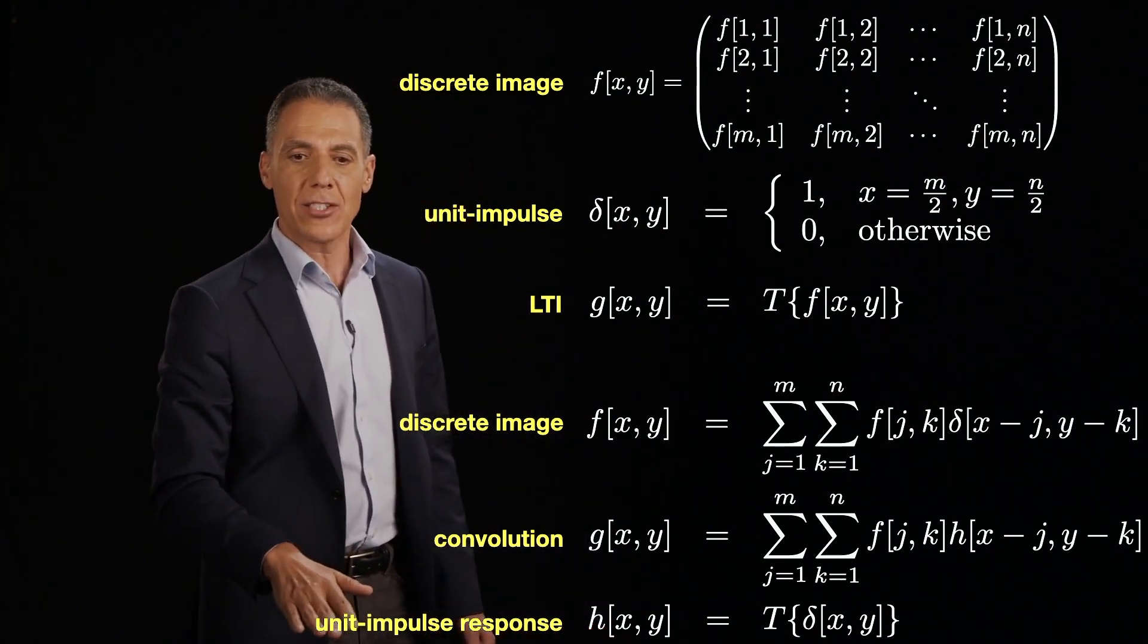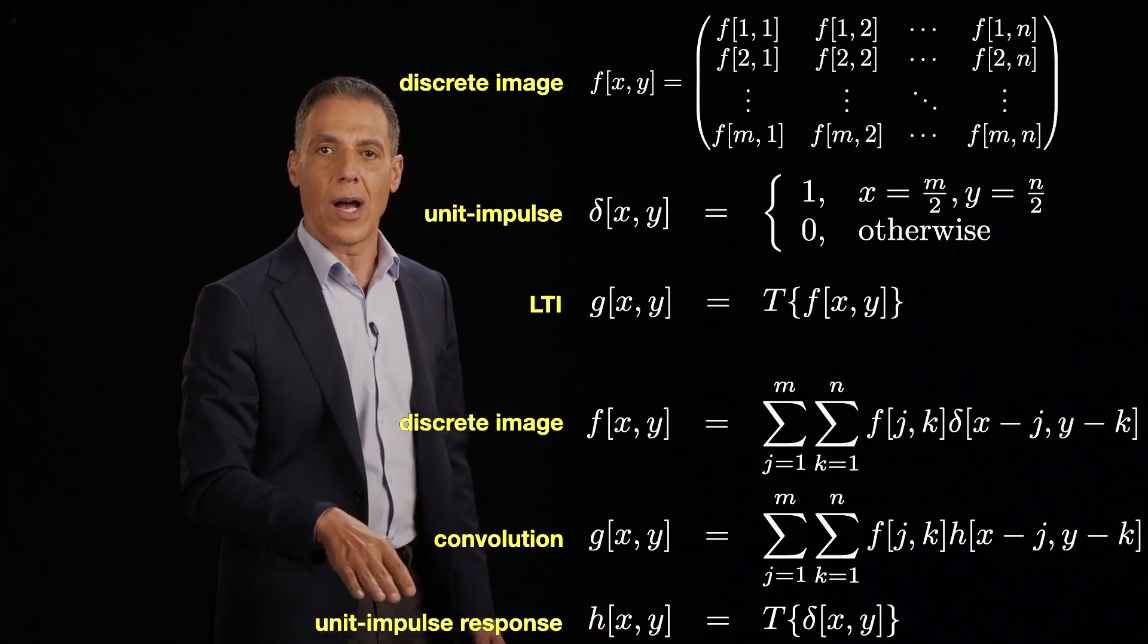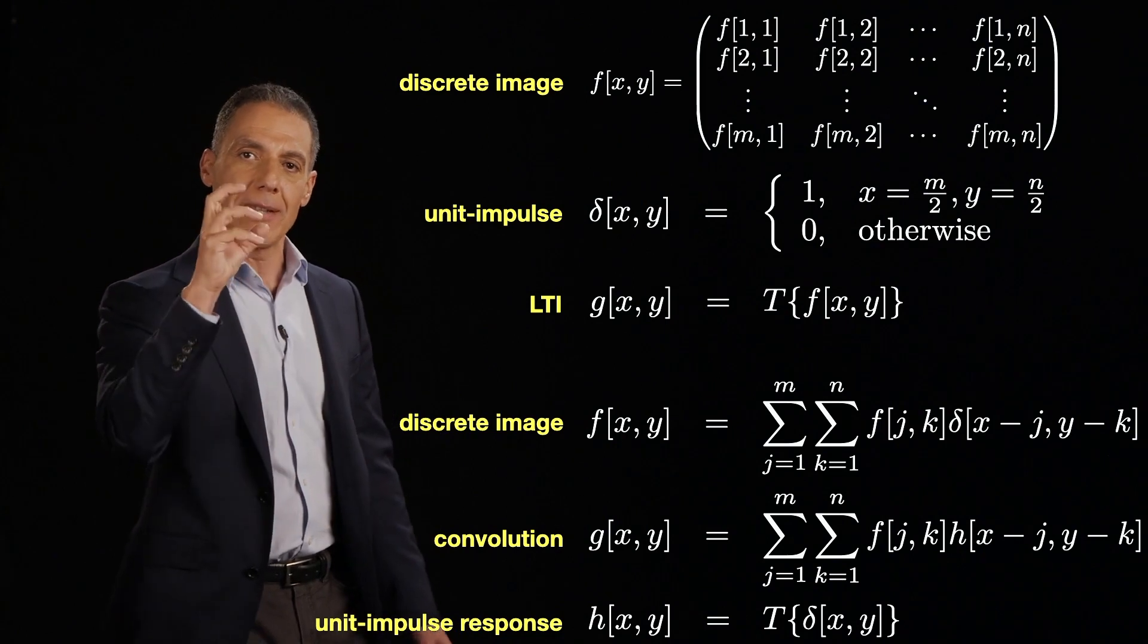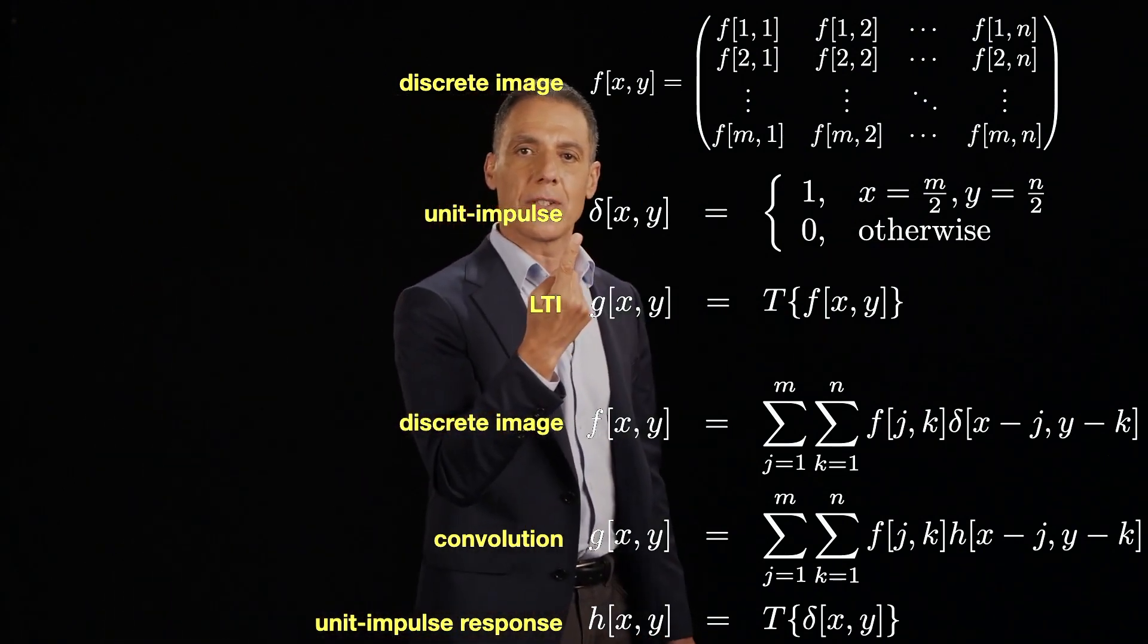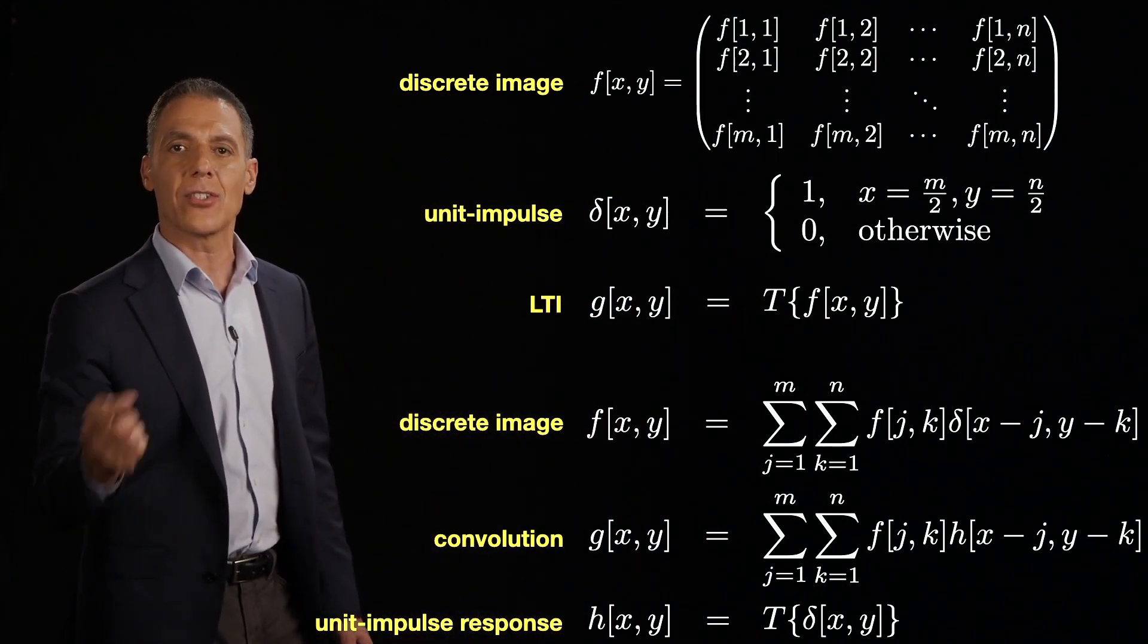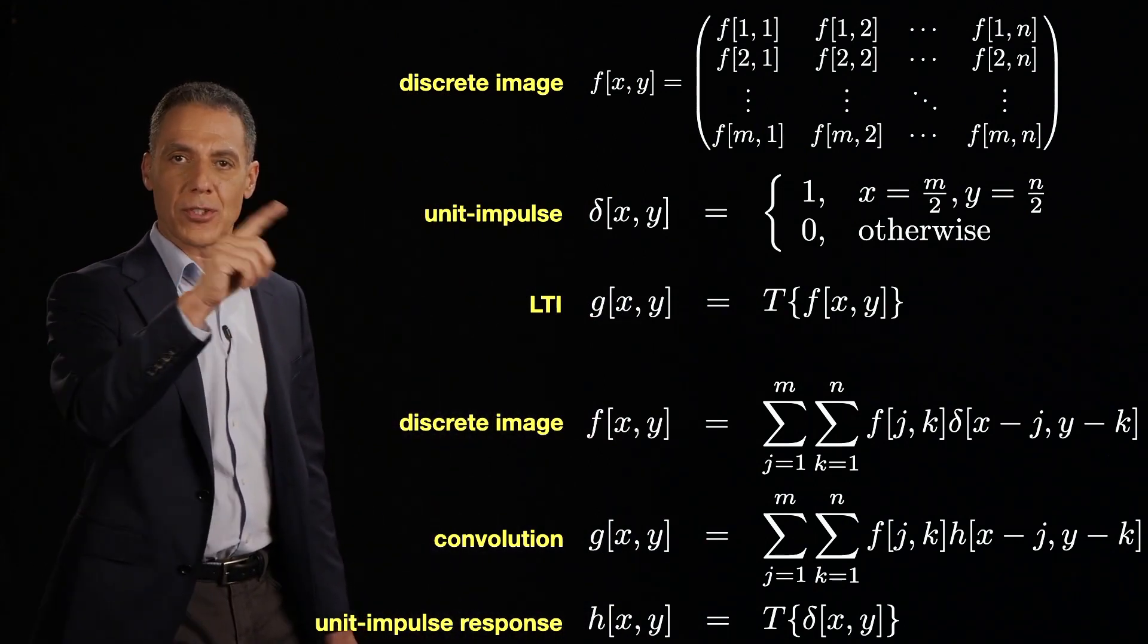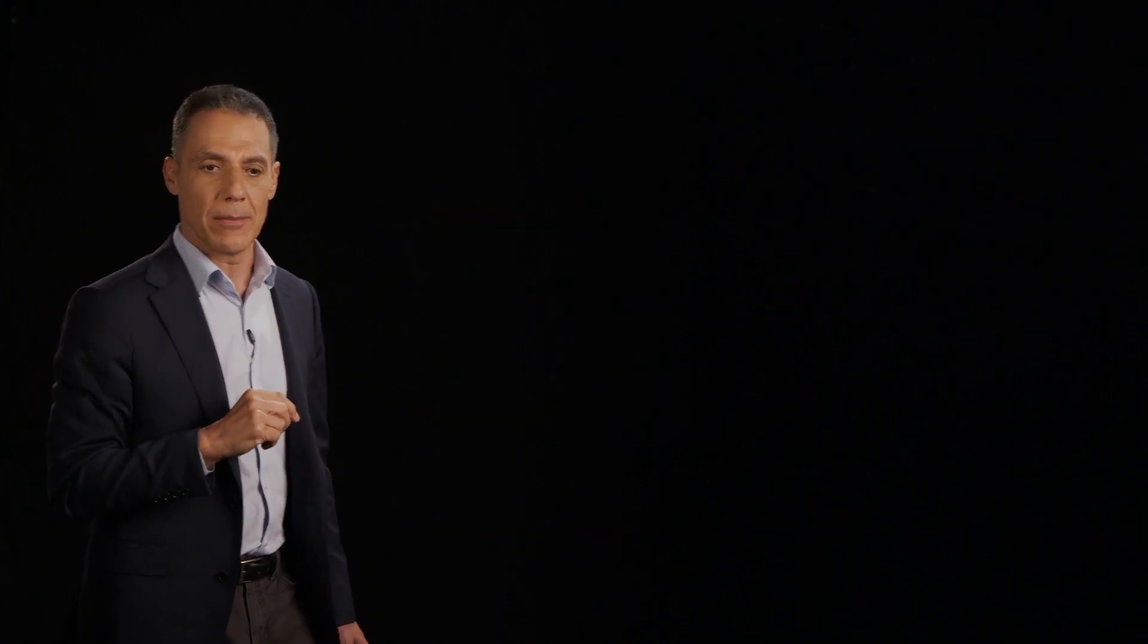And again, H now of x,y is what happens when you feed that 2D unit impulse into the linear time invariant system. And it fully characterizes the linear time invariant system, both for signals and for images.